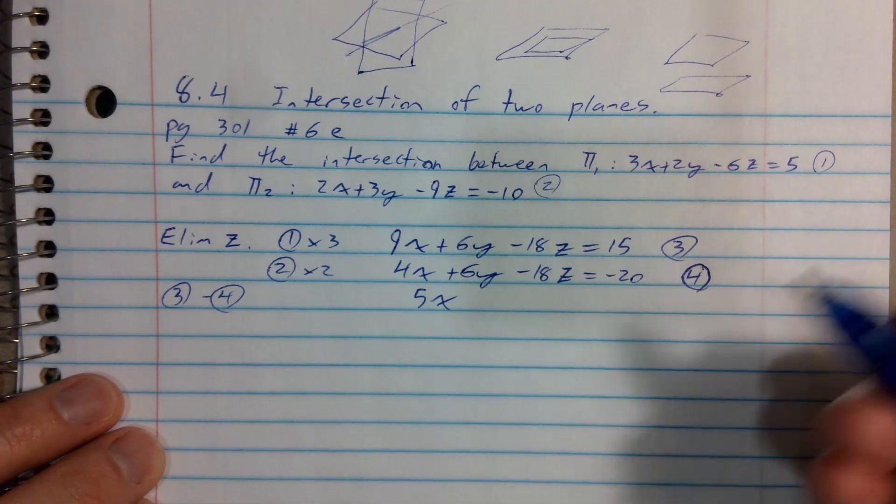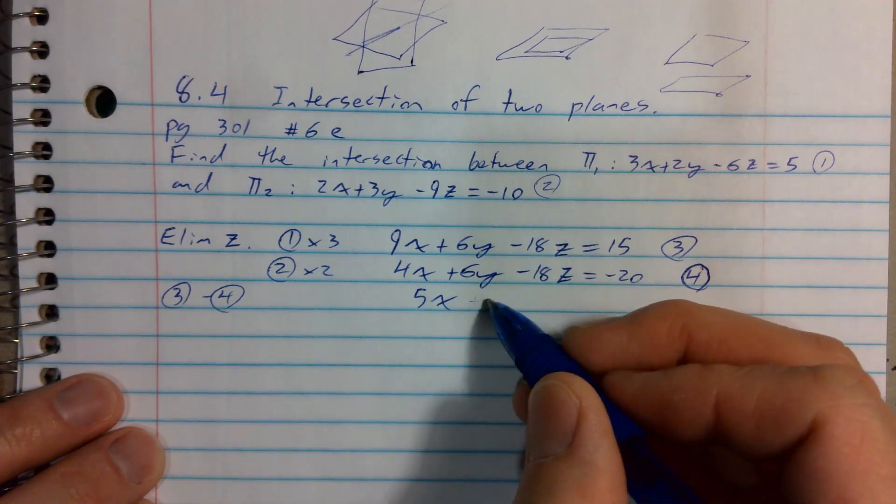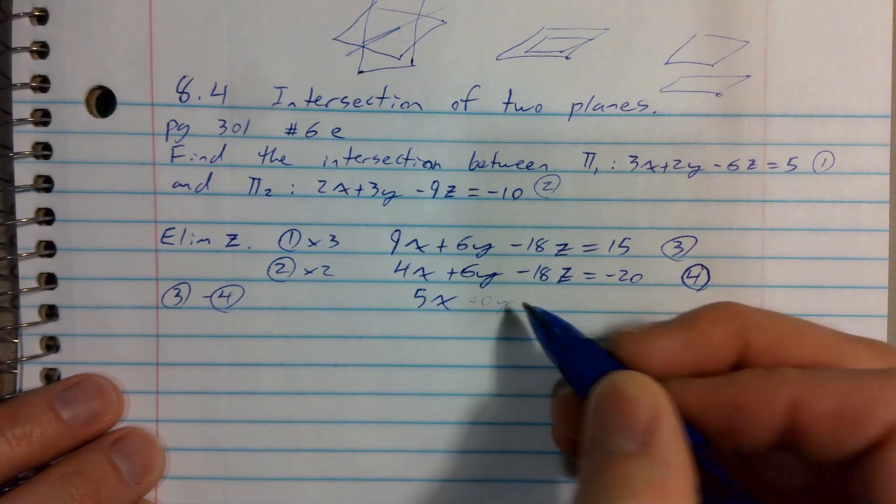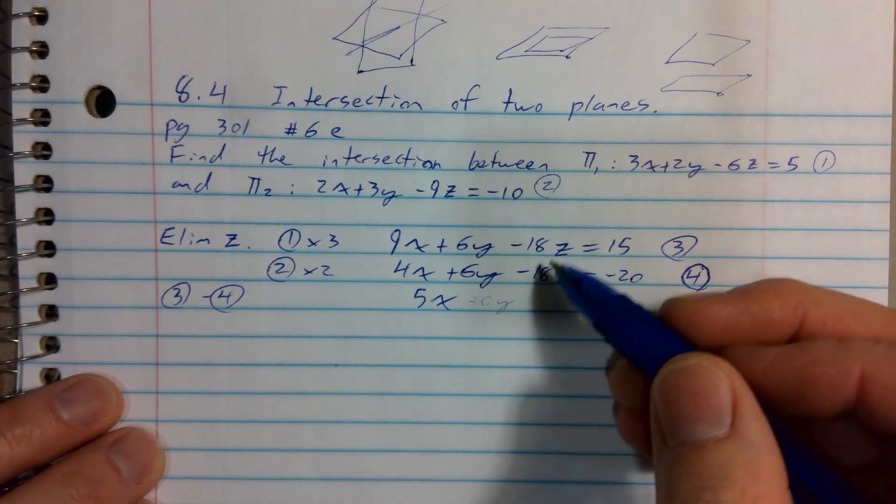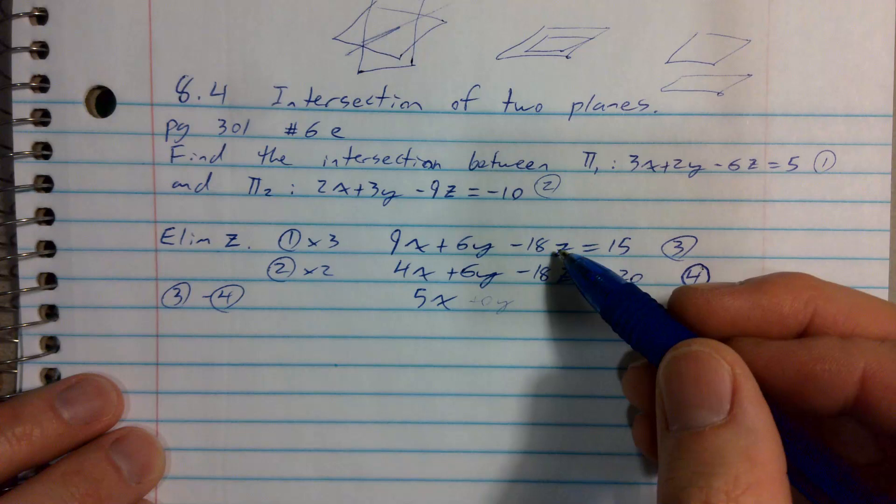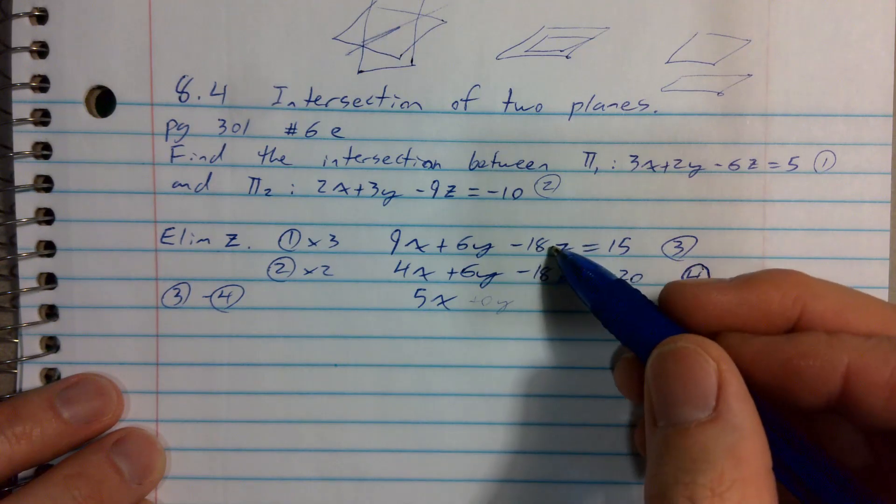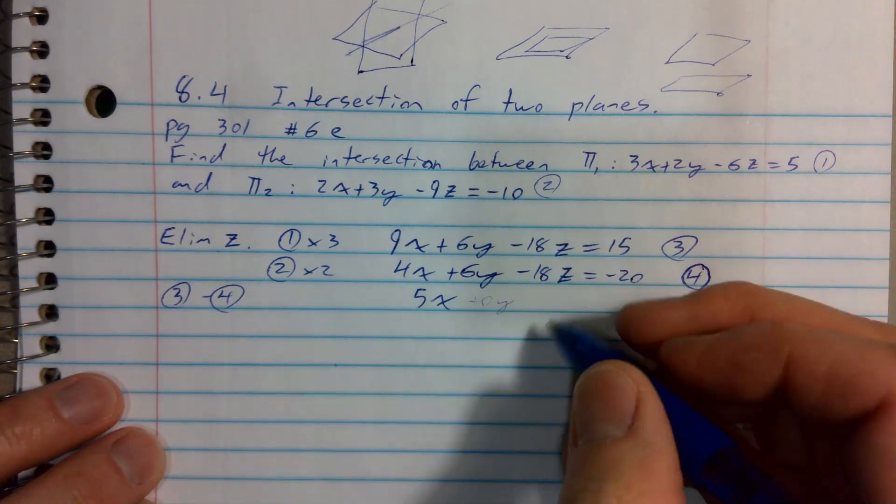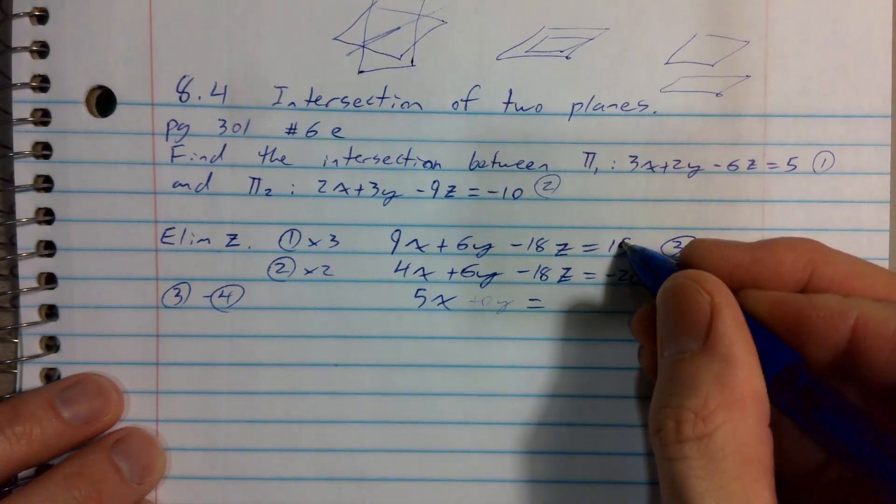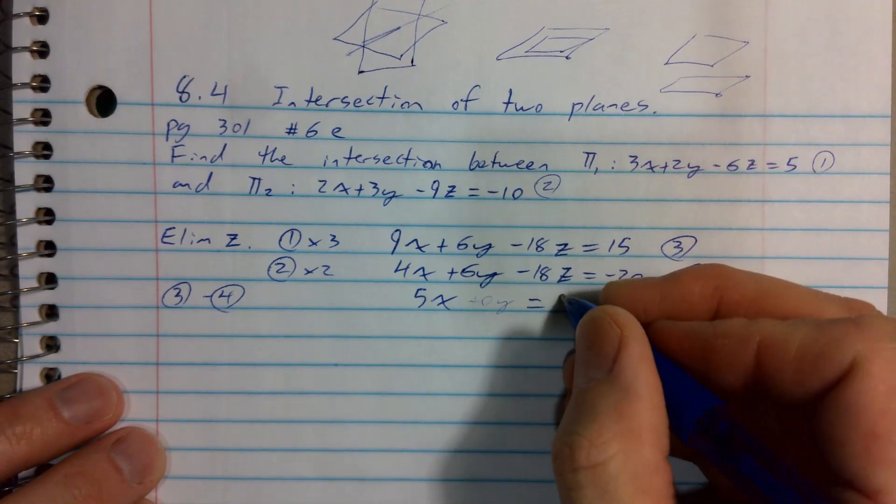And 6y minus 6y. Well, that's plus 0y. Some people will write it in because they didn't want it to eliminate. That wasn't their goal, but it's going to disappear in a second anyways. And negative 18z minus negative 18z. That's zero zeds. I don't write that in because that was my goal. 15 minus negative 20 is 35.